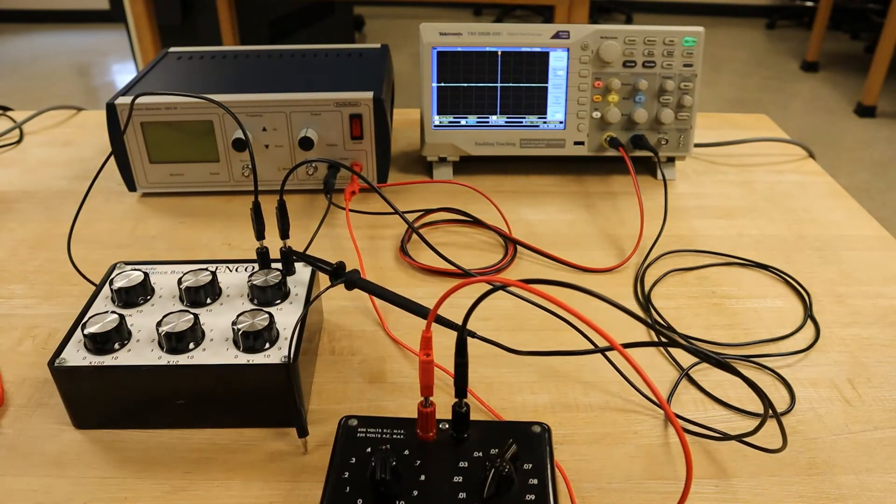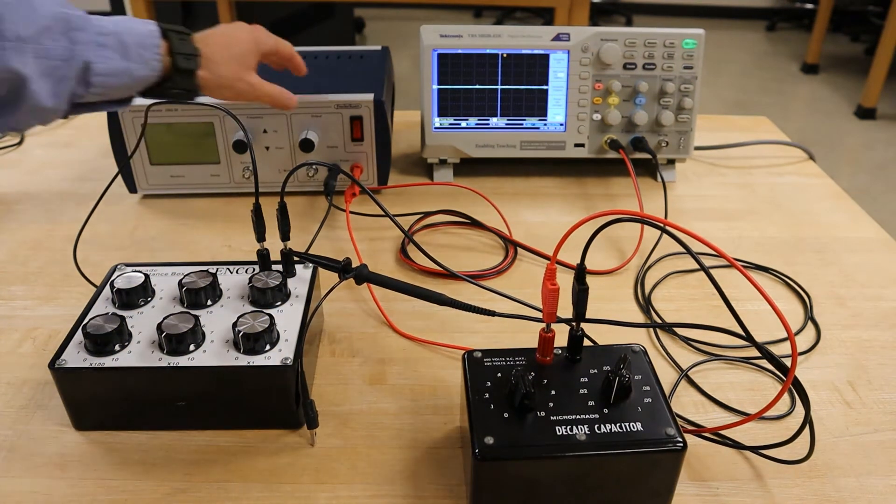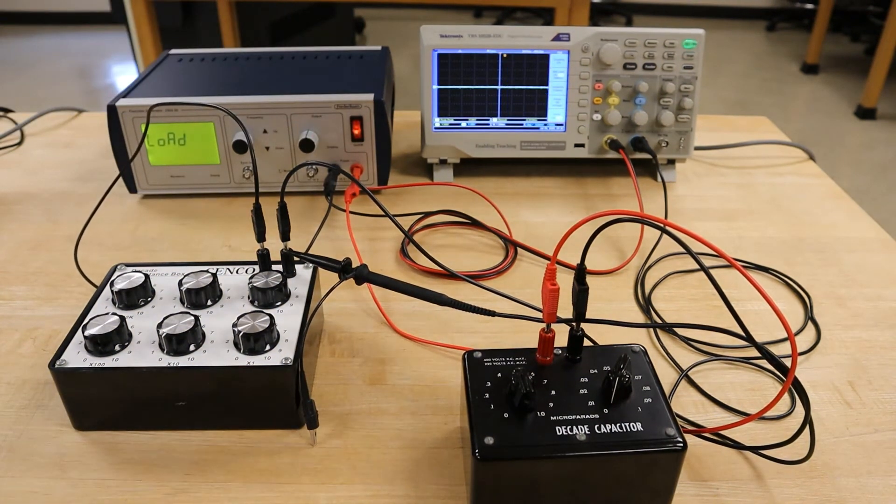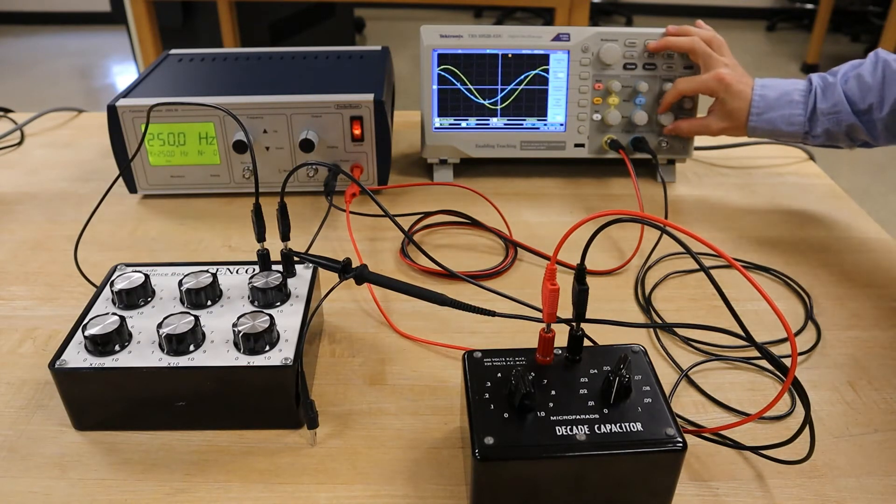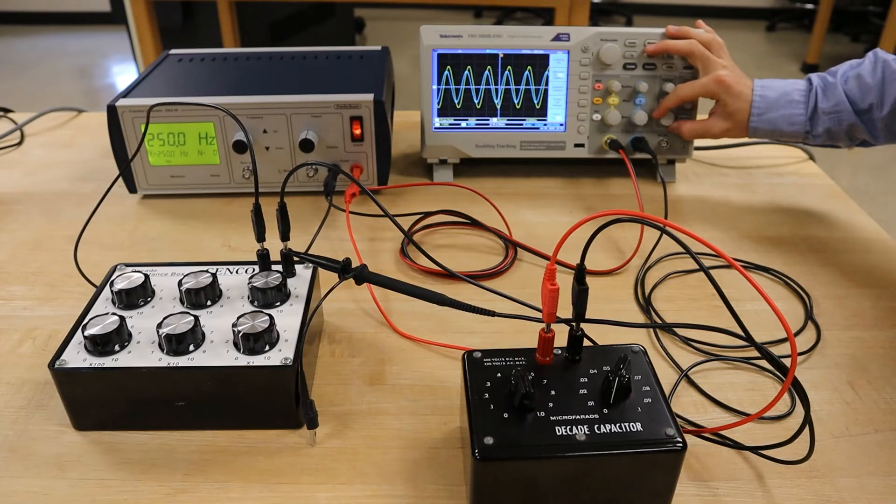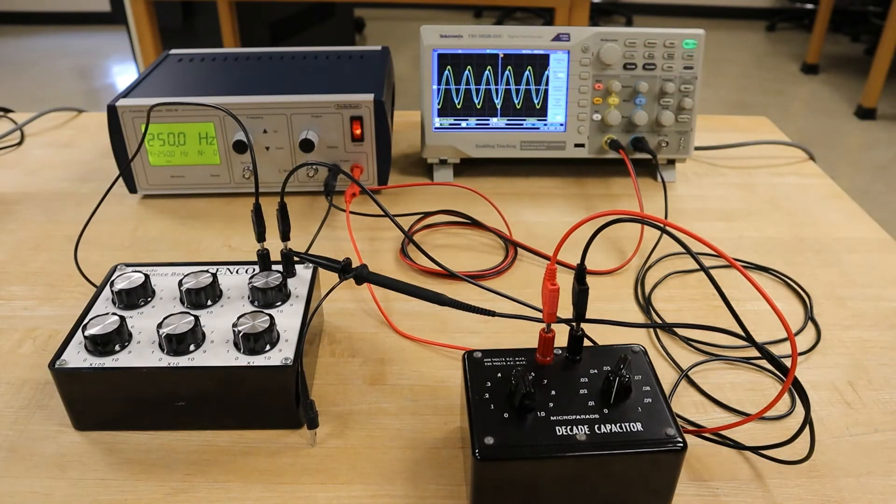With the circuit complete, we'll re-energize our function generator and then make any necessary scaling changes to the oscilloscope so that both waveforms are visible on the screen. Notice how the two waveforms are now out of phase with each other.